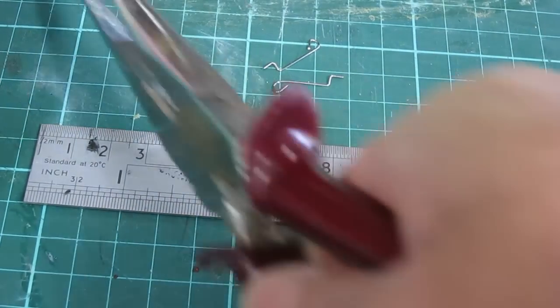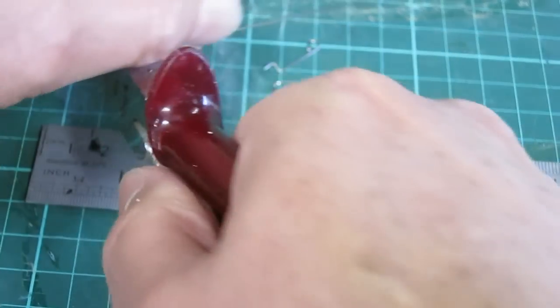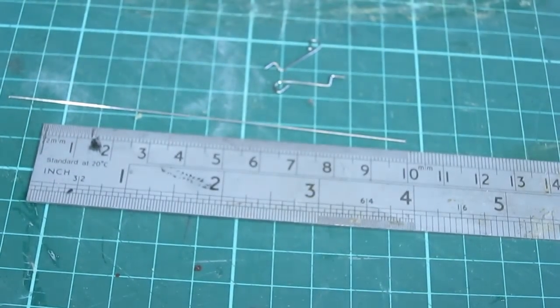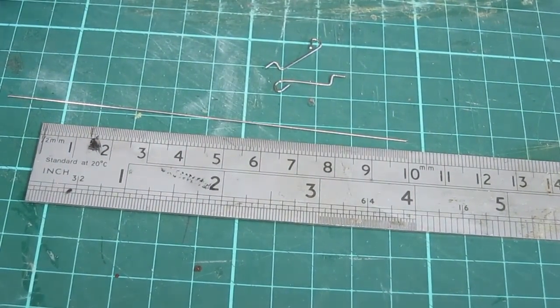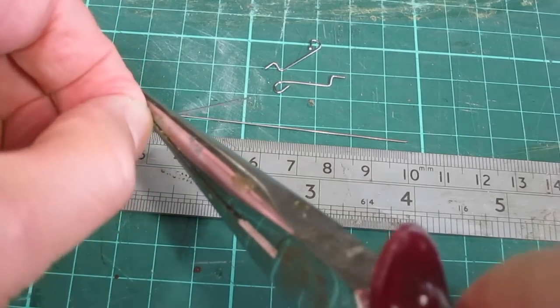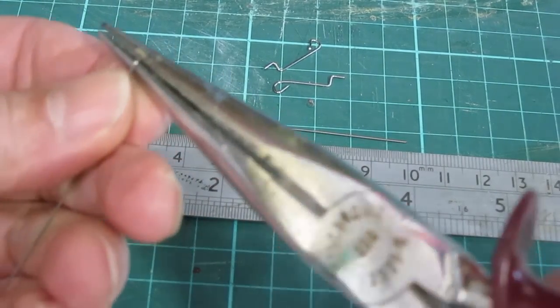Now I'm using the pushrod wire to form the torsion springs. Start with an 11cm long piece, and then I bend two 25mm legs leaving a 60mm centre section.